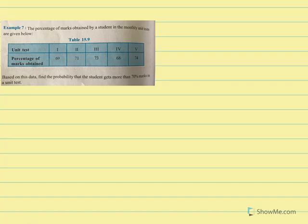The percentage of marks obtained by a student in monthly unit tests are given below. Based on this data, find the probability that the student gets more than 70 percent marks in a unit test. In test 1 the child got 69%, test 2: 71%, test 3: 73%, test 4: 68%, test 5: 74%.